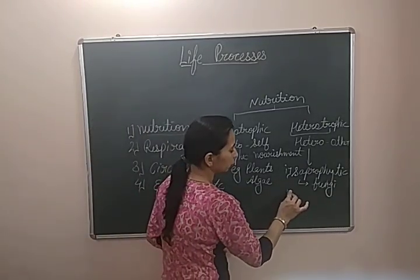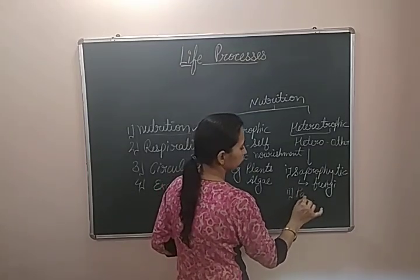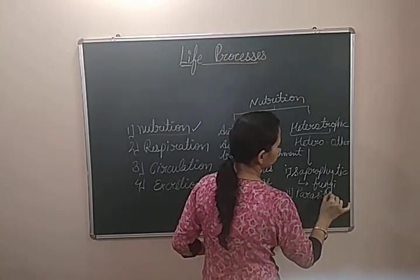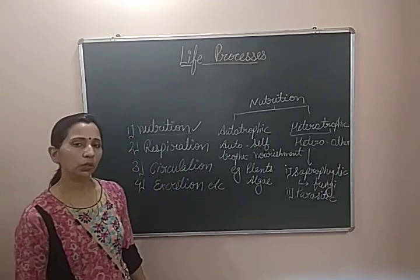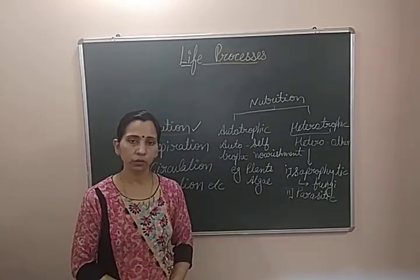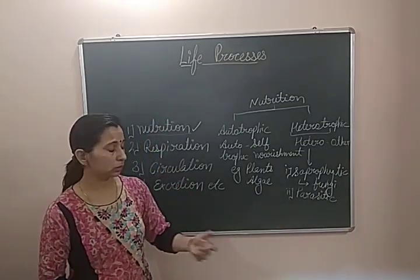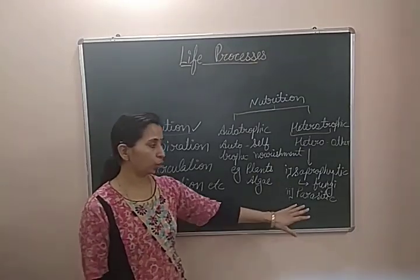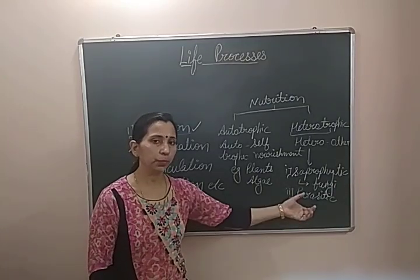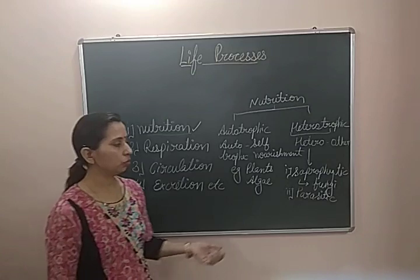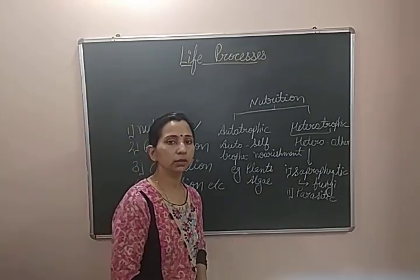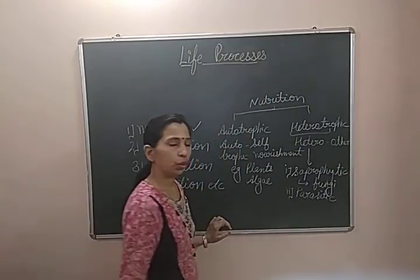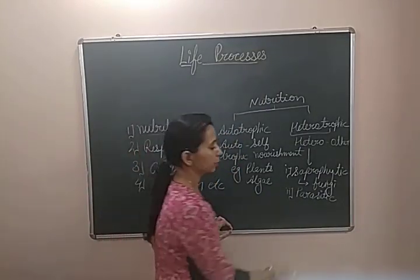The second type of heterotrophic nutrition is parasitic nutrition. This is the type of nutrition in which one organism depends on another organism for its nutrition, and the organism on which it depends is known as the host. The organisms are known as parasites. These are non-green plants which carry out parasitic nutrition, for example, Cuscuta.